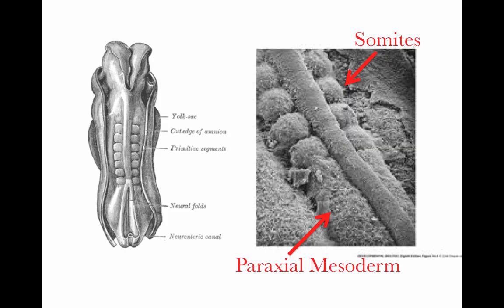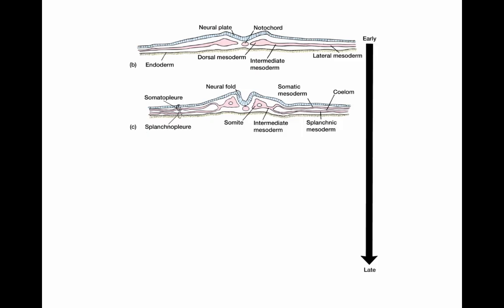Looking at an illustration and a micrograph in dorsal view, we see the forming neural tube with balls of tissue on either side — the somites. The notochord is visible with these little somites alongside it. Somites form sequentially in an anterior-to-posterior direction, and they are very important to the vertebrate body plan because they are the developmental basis of segmentation — every repeating, segmental, metameric structure in vertebrates has its developmental basis in the somites, with one somite giving rise to one repeating structure.